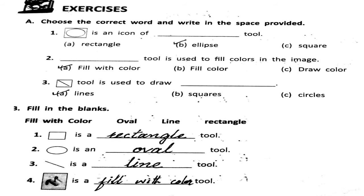Tools: choose the correct word and write in the box provided. Number 1 is an icon of which tool? Option A is rectangle, option B is Alice, option C is square. The correct answer is option B — Alice tool.